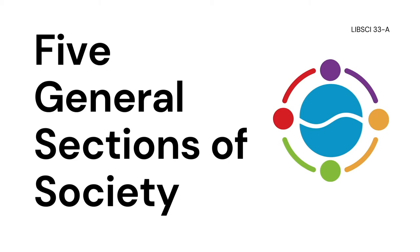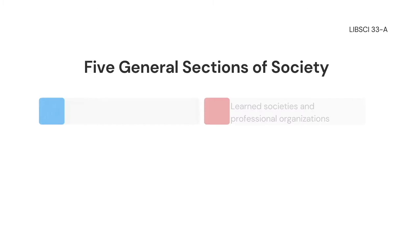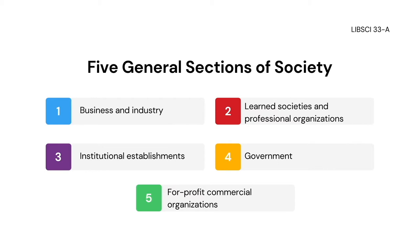Where did indexing and abstracting originate from? Where did these two services even come from? Generally, these operations originate from five general sections of society: business and industry, learned societies and professional organizations, institutional establishments, government, and for-profit commercial organizations.